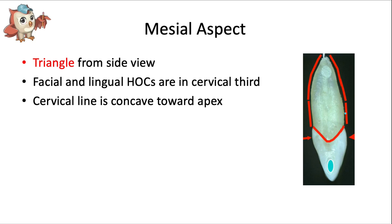Let's take a look at the mesial aspect. There are some similarities to the maxillary central. Number one, the crown has a triangular side view. Number two, the facial and lingual height of contours fall in the cervical third — and this is true for all anterior teeth, all incisors and canines in the mouth. The cervical line is concave toward the apex, on both the mesial and distal sides. Four things fall on the long axis of the tooth from this view: the incisal edge, the proximal contact, the height of the CEJ, and the root apex.